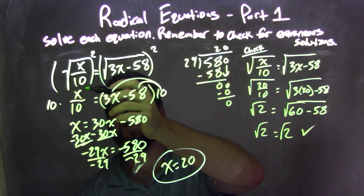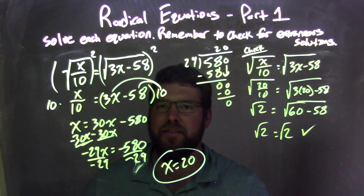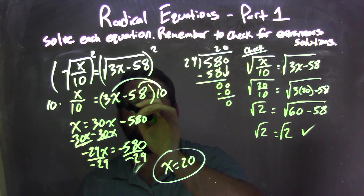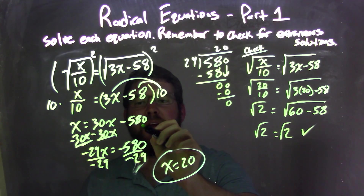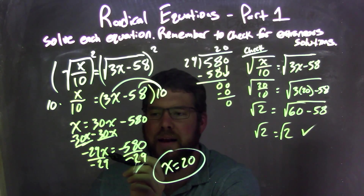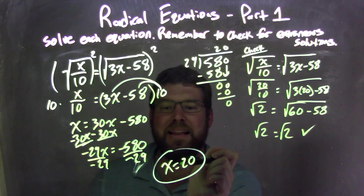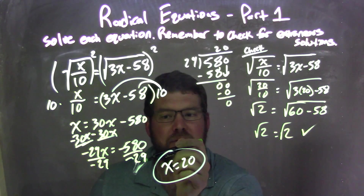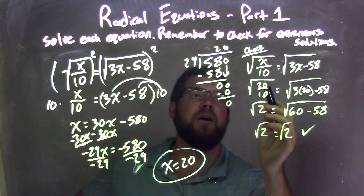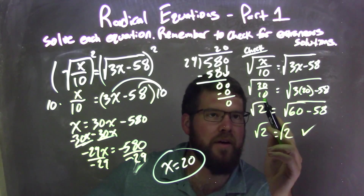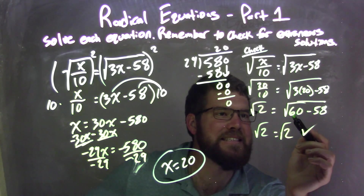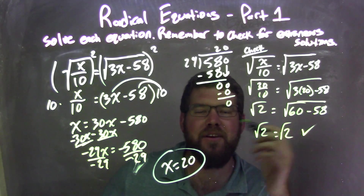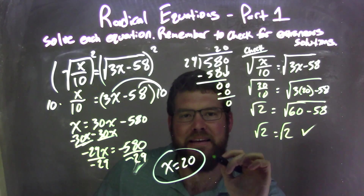Let's recap. We were given the square root of x over 10 equals the square root of 3x minus 58. I squared both sides to eliminate the square roots, leaving x over 10 equals 3x minus 58. Then I multiplied 10 to both sides — remember to distribute that 10 to both parts on the right — leaving x equals 30x minus 580. Subtracting 30x from both sides gives negative 29x equals negative 580. Dividing both sides by negative 29: a negative divided by a negative is positive, leaving x equals 20. I plugged 20 back into the original equation: 20 divided by 10 is 2, so square root of 2 on the left; 3 times 20 is 60, minus 58 is 2, so square root of 2 on the right. Square root of 2 equals square root of 2 — no extraneous solutions. x equals 20 is my final answer.